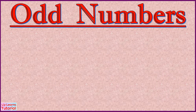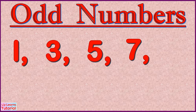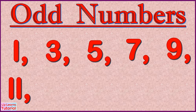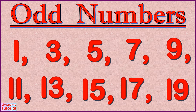If we skip count by twos starting from one: one, three, five, seven, nine, eleven, thirteen, fifteen, seventeen, nineteen are all odd numbers.